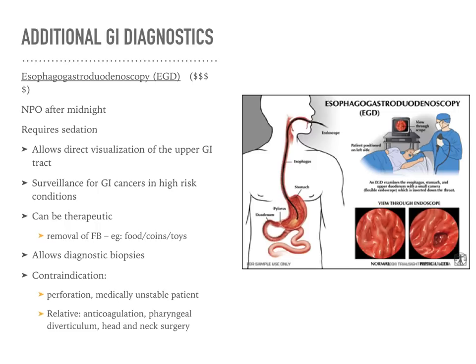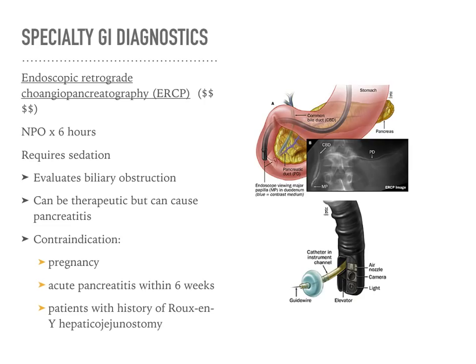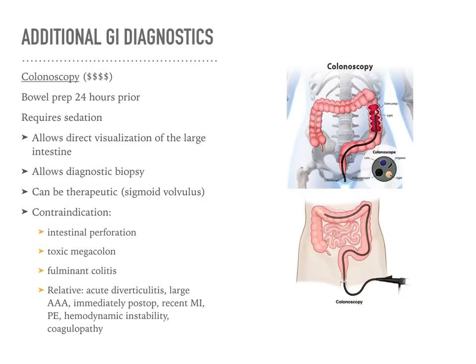The esophagogastroduodenoscopy, or EGD, allows us to look at the structures of the esophagus, the stomach, and the first portion of the intestines. It allows the provider to remove foreign bodies, obtain biopsies, and assess the surrounding tissues. The ERCP is helpful to assess the biliary ducts for any type of obstruction, also done in the endoscopy suite. Colonoscopy goes through the rectum to evaluate surrounding structures for polyps or anything cancerous, biopsies can be taken, and it can also be therapeutic for patients with sigmoid volvulus.